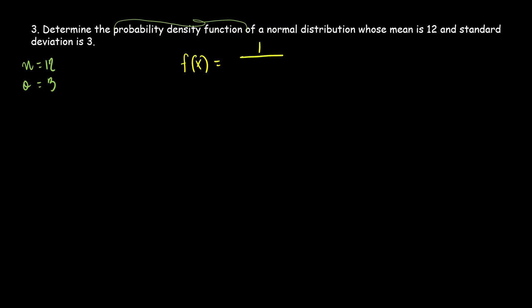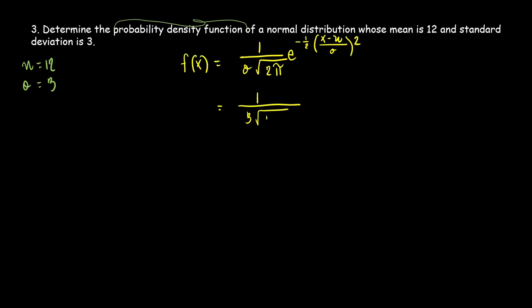The formula is: f(x) equals 1 over standard deviation times square root of 2π, times e to the power of negative one-half of the quantity x minus mean over standard deviation, squared. All you have to do is substitute all the given values. So: 1 over 3 times square root of 2π, times e to the negative one-half of x minus 12 over 3, squared.